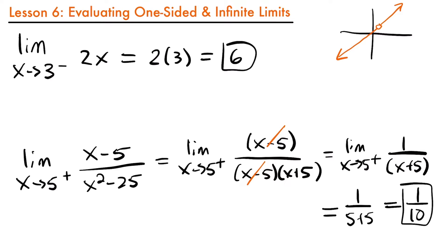Any time we can use one of our methods for evaluating limits to simplify our function and remove a discontinuity, we should do that. Then we'll be able to evaluate the one-sided limit just like a two-sided limit. But what if we can't? What if we can't redefine our function to remove any discontinuities and it's still going to be undefined at the value we're approaching?